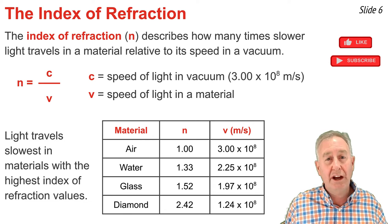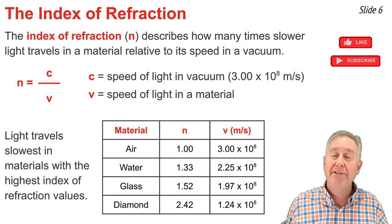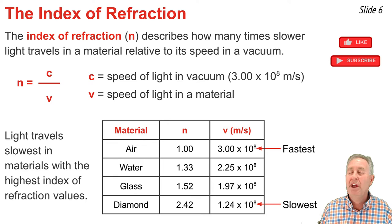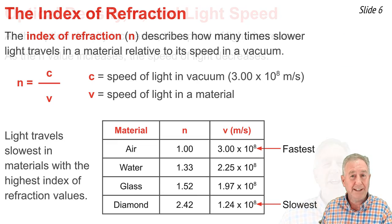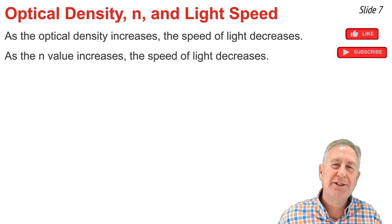You'll notice that air, the least optically dense material with the smallest n value, has the highest speed. And diamond, the most optically dense material with the largest n value, has the lowest speed of light.